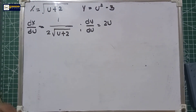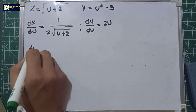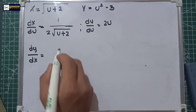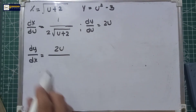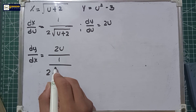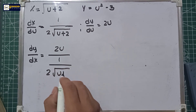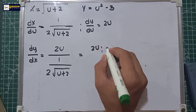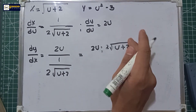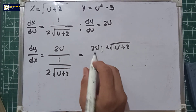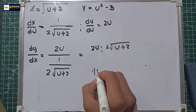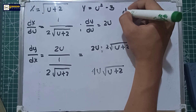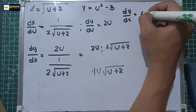So for the first derivative under the parametric form, dy over dx is equal to dy over du divided by dx over du. That is 2u divided by 1 over 2 square root of u plus 2.